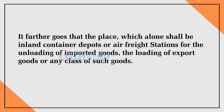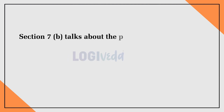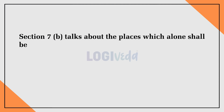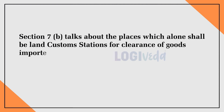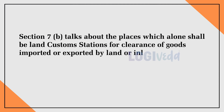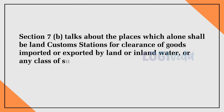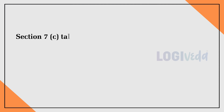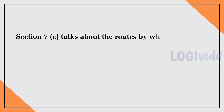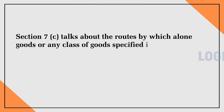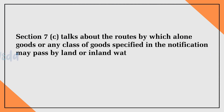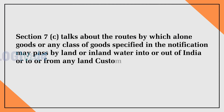Section 7b talks about the places which alone shall be land customs stations for clearance of goods imported or exported by land or inland water, or any class of such goods. Section 7c talks about the routes by which alone goods or any class of goods specified in the notification may pass by land or inland water into or out of India, or to or from any land customs station from or to any land frontier.